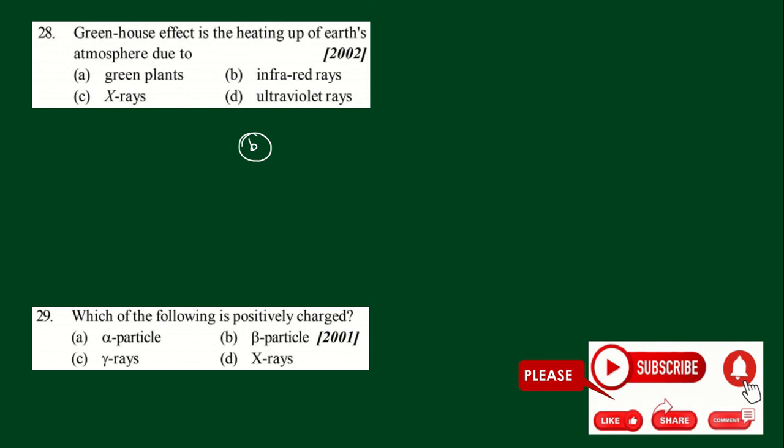The greenhouse effect is the heating up of the earth's atmosphere due to infrared rays - the second option as the answer. Question 29: Which of the following is positively charged? X-rays and gamma rays are rays, beta rays are electrons. So alpha particles, that is helium nucleus, is the answer.